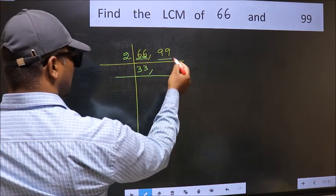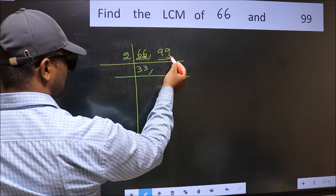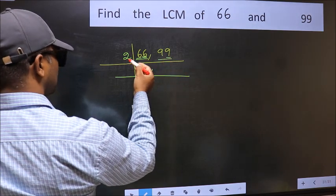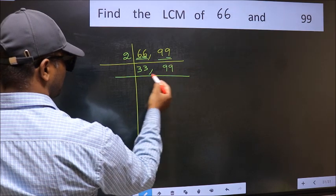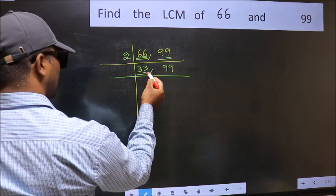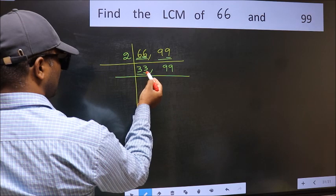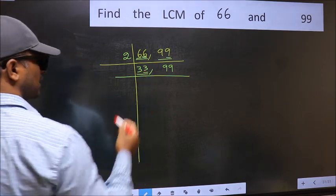The other number 99, last digit 9, not even. So this is not divisible by 2. So you write it down as it is. Now here we have 33, last digit 3, not even. So this is not divisible by 2.